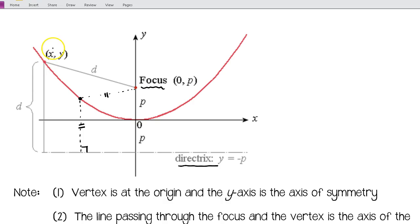We can see that here with this point (x, y), this has length d, and this has length d. The set of all points that are equidistant from a given point called the focus and a given line called the directrix.